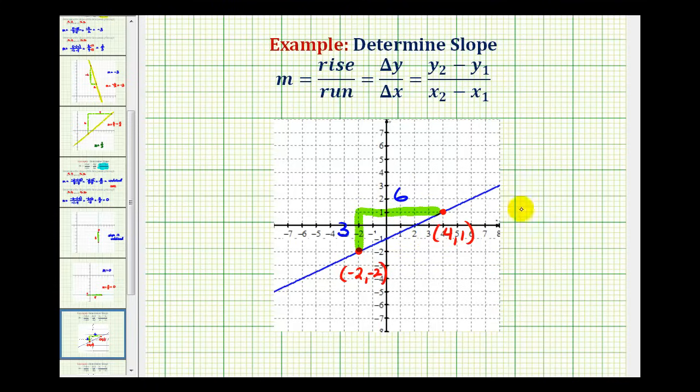So the vertical change would be positive three and the horizontal change would be positive six. Using this information, we can recognize that the ratio of the vertical change to horizontal change, which would be our slope, would be three to six or 3/6, and these both share a common factor of three. So the slope of this line is equal to one half.